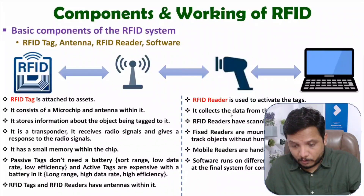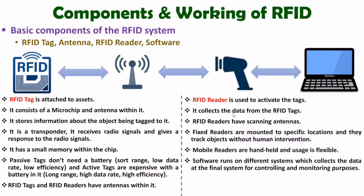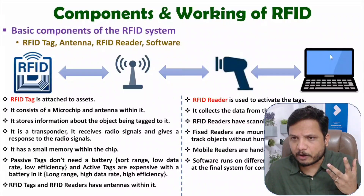The fourth element that comes into the picture is software. Softwares are there along with the RFID tag as well as with the RFID reader. Based on those softwares, information is exchanged and gathered, then provided to the final system where we will be doing controlling and monitoring. Once information comes to the final system, it can be uploaded on the internet, and from the internet there can be many applications. If you interface this information to the internet, then the entire application becomes IoT — Internet of Things.